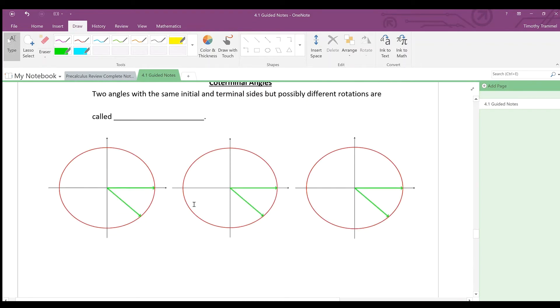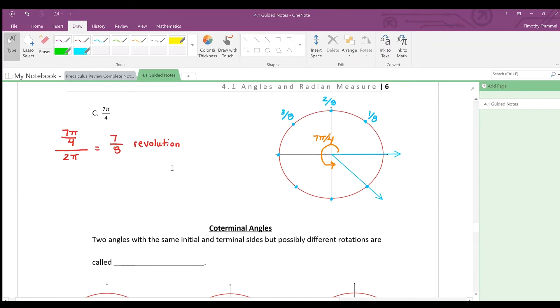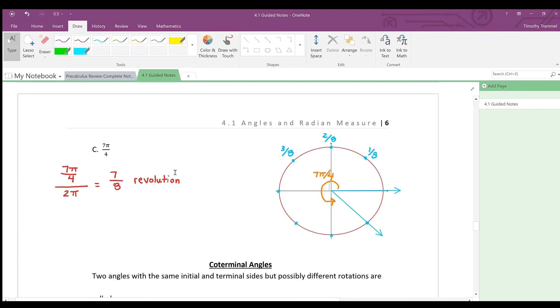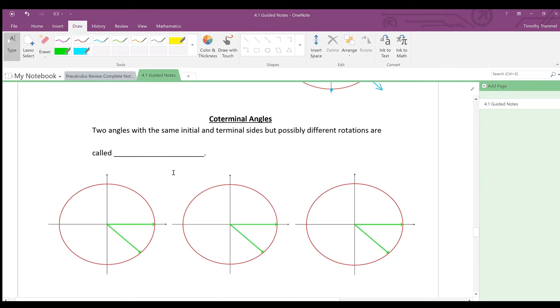Now, there is one thing to note about the examples that we did up here. Everything that we looked at between A, B, and C was less than a single revolution. Well, sometimes things revolve multiple times. Not everything is going to be less than one revolution. So this idea of coterminal angles is going to be extremely helpful.